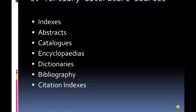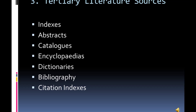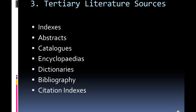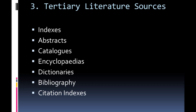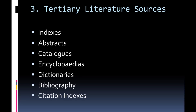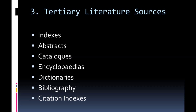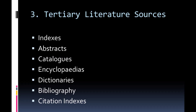Tertiary literature sources. These sources include indexes, abstracts, catalogues, encyclopedias, dictionaries, bibliography, and citation indexes.